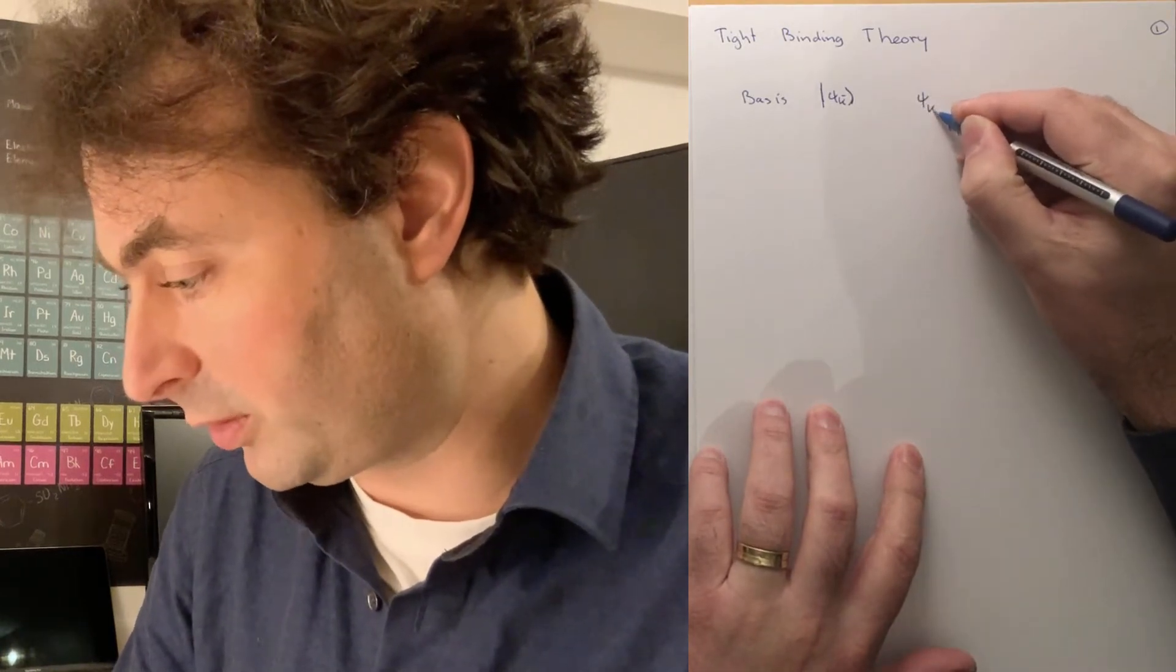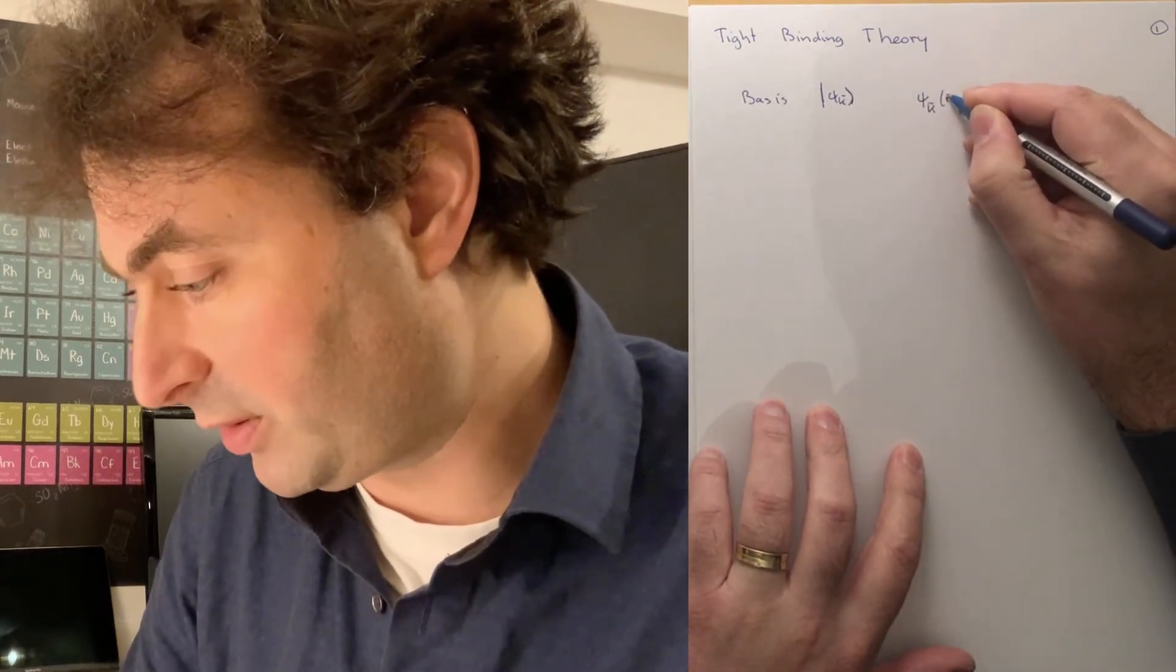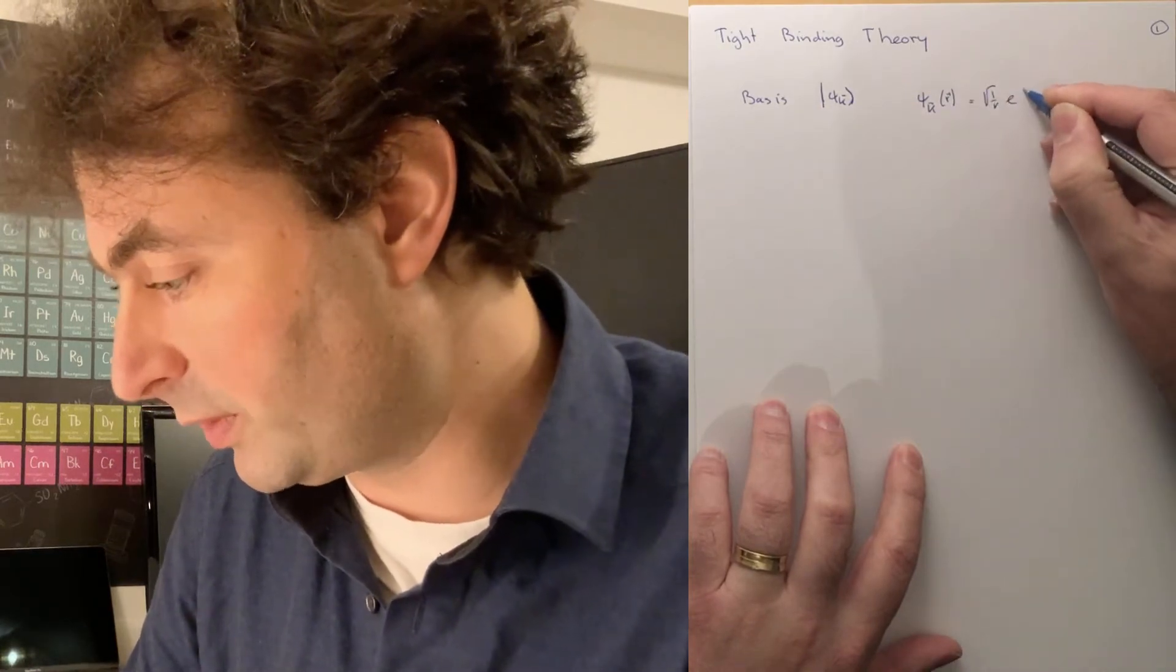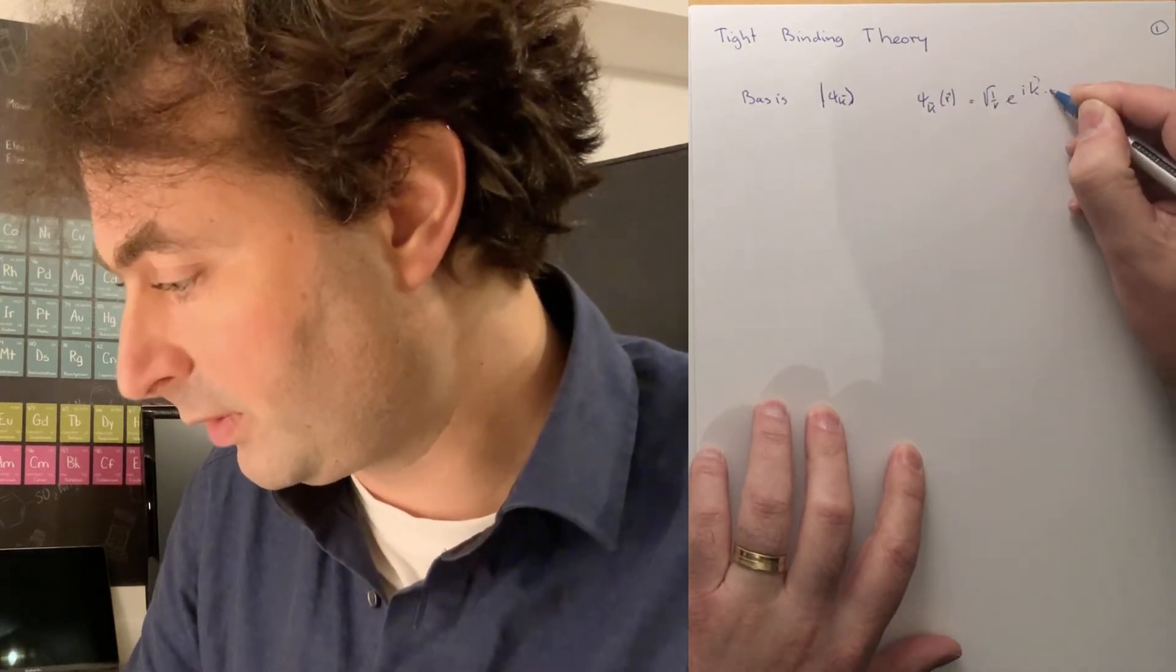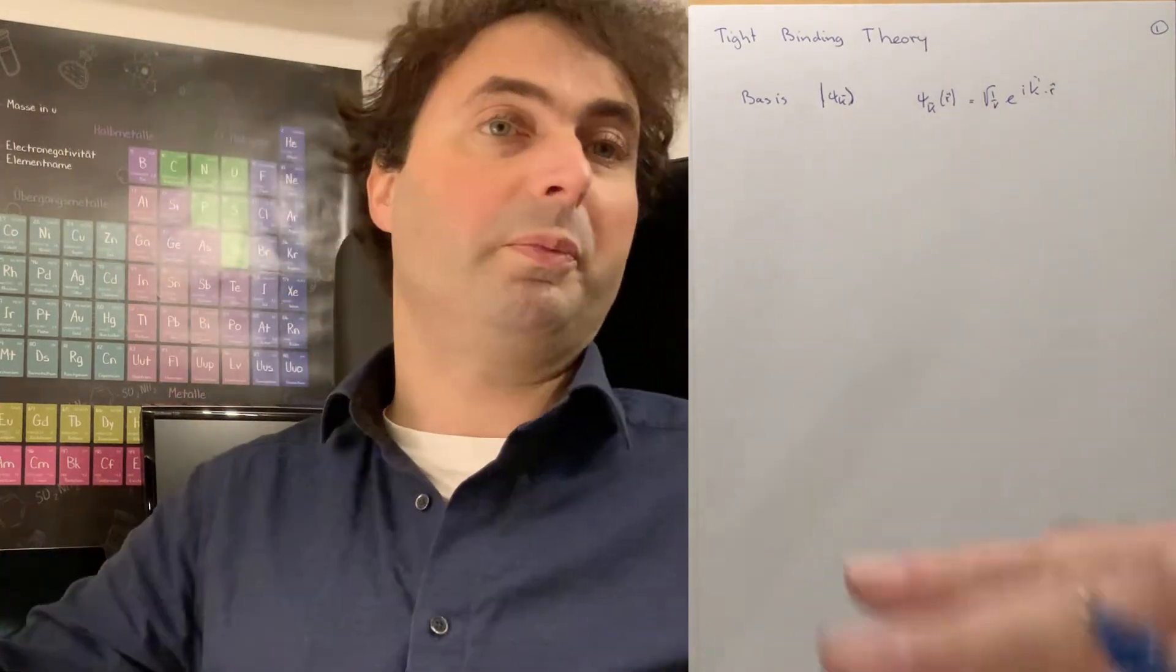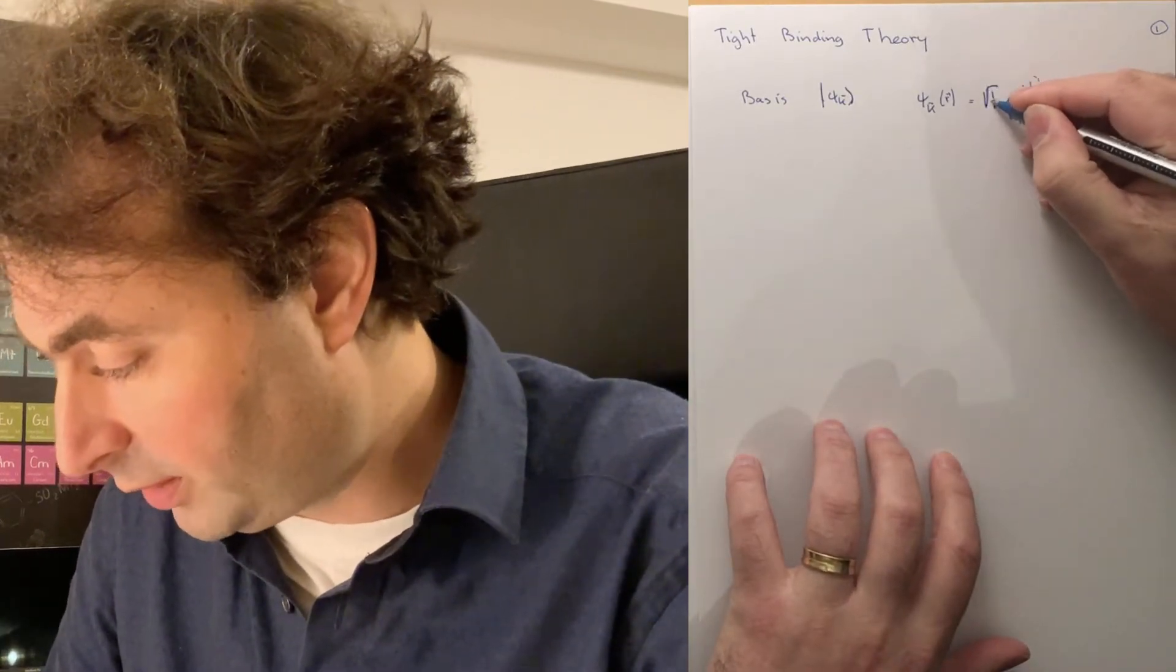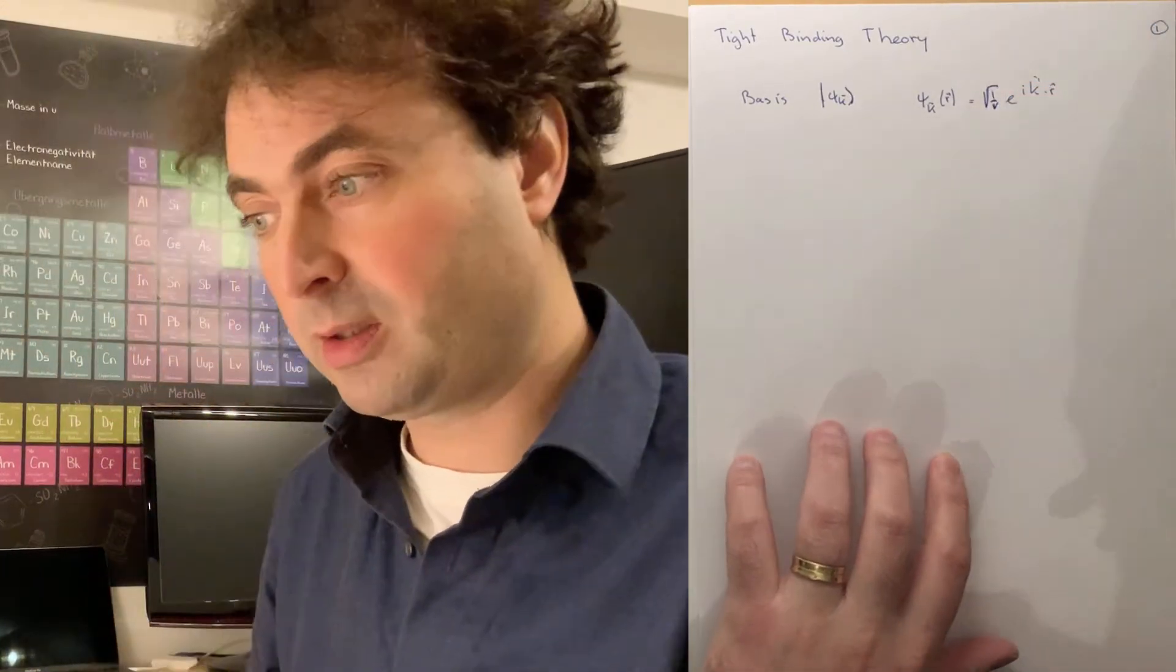And the basis where we worked on are basically the plane waves, square root 1 over v, because we normalize, where v is the volume of a big box, which is an integer number of unit cells in the reciprocal lattice, and goes to infinite.